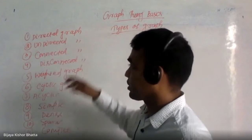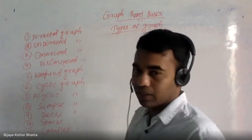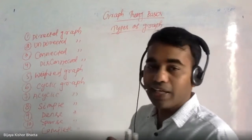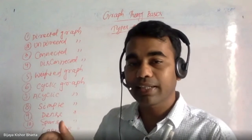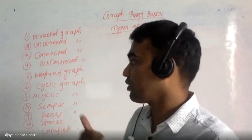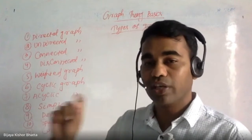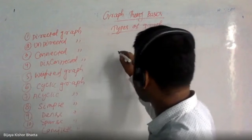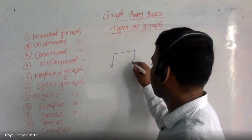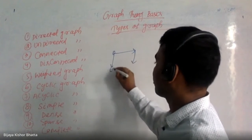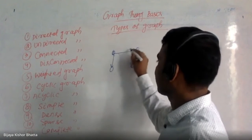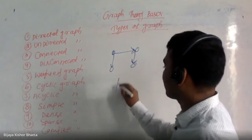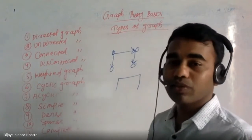The first type is the directed graph. As the name suggests, it is a directed graph — that means whenever there is an edge, that edge has a direction associated with it. So every edge in a directed graph comes with a direction. If these are the vertices, there exists a direction on every edge.